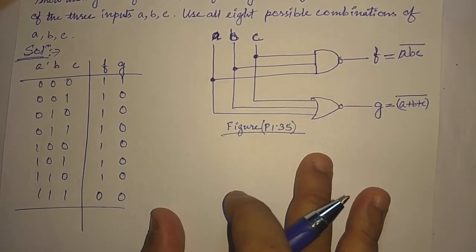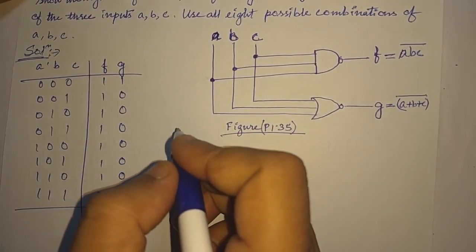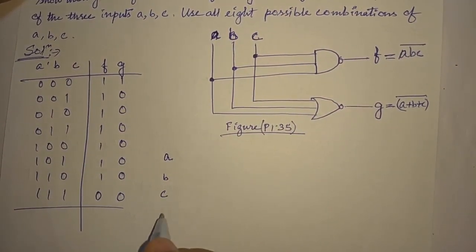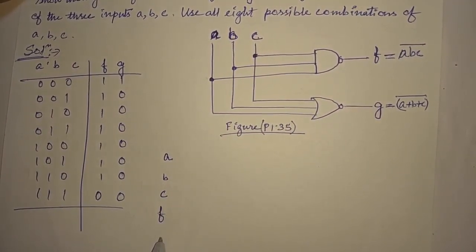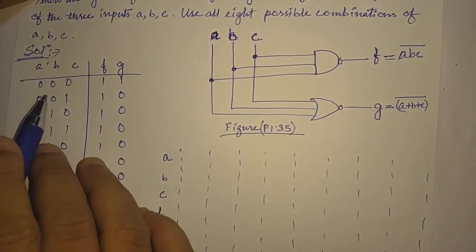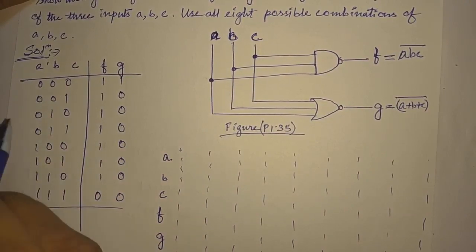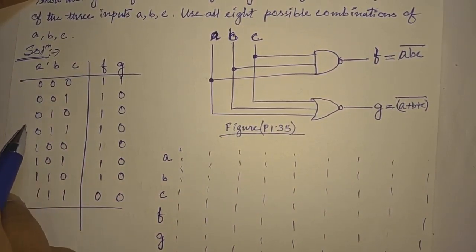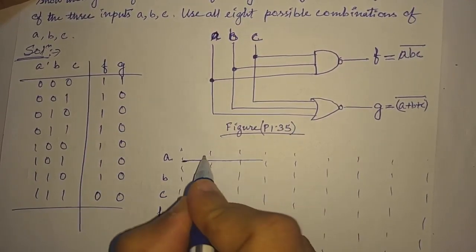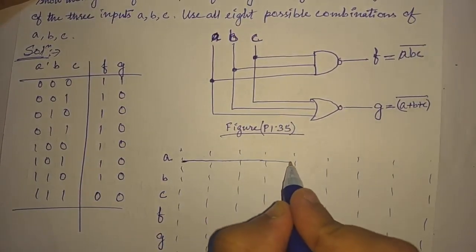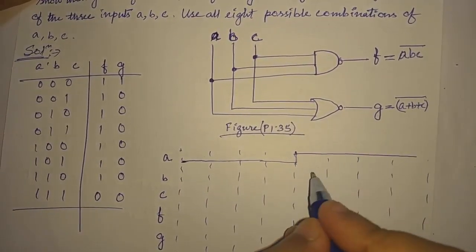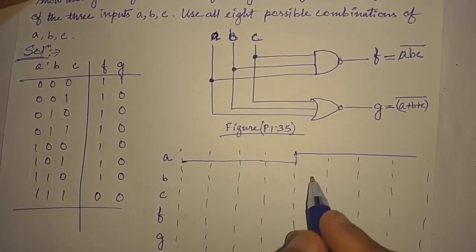Now let us draw the timing diagram. For the timing diagram, we will have three inputs A, B, C, and the outputs F and G. A is 0 for 4 cycles — we make A equal to 0 up to cycle 4 — and then A switches to 1. This is the timing diagram of A.